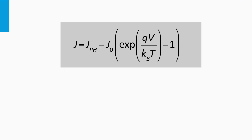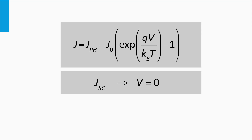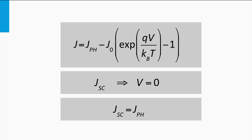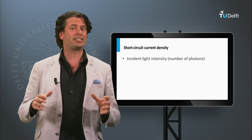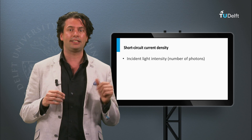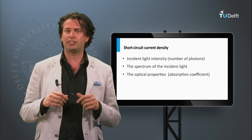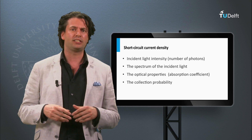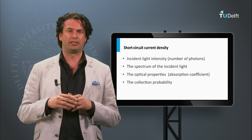We can derive a simple equation for the short circuit current density of an ideal solar cell using the expression of the JV relation. If we take a voltage equal to zero, the short circuit current density is equal to the photocurrent density. The short circuit current density depends on several factors like the incident light intensity, the spectrum of the incident light, the optical properties and the collection probability.